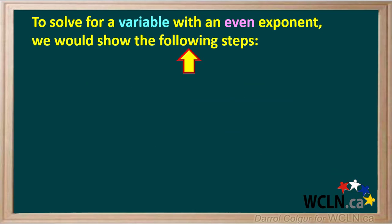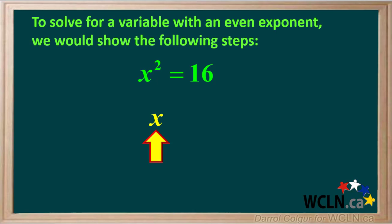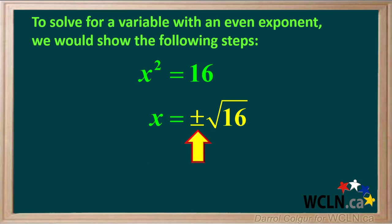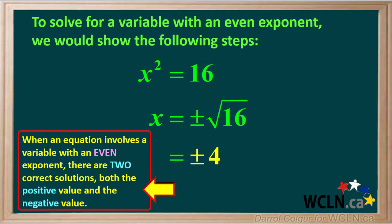To solve for a variable with an even exponent, we would show the following steps. For example, given that x squared equals 16, we take the square root of both sides. The square root of x squared is x, and we show the square root of 16 as the positive or negative square root of 16, which is positive or negative 4. So when an equation involves a variable with an even exponent, there are two correct solutions: both the positive value and the negative value.